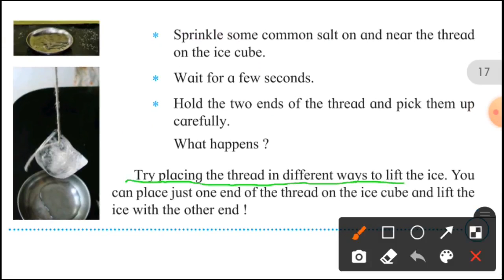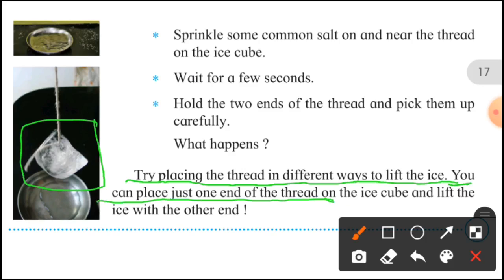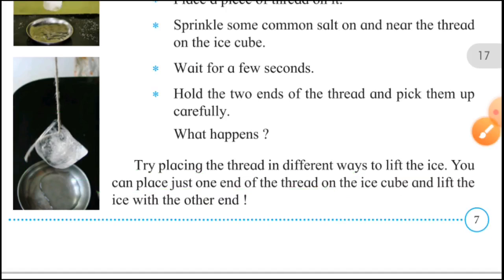Try placing the thread in a different way to lift the ice. Agar aapne corner mein lagaya hai, to ek kone se doosre kone tak barf utha sakte ho. You can also place just one end of the thread on the ice cube and lift the ice with the other end — ek kona barf ke upar rakh ke, namak daal ke chipka ke, doosre kone se barf lift kar sakte ho.